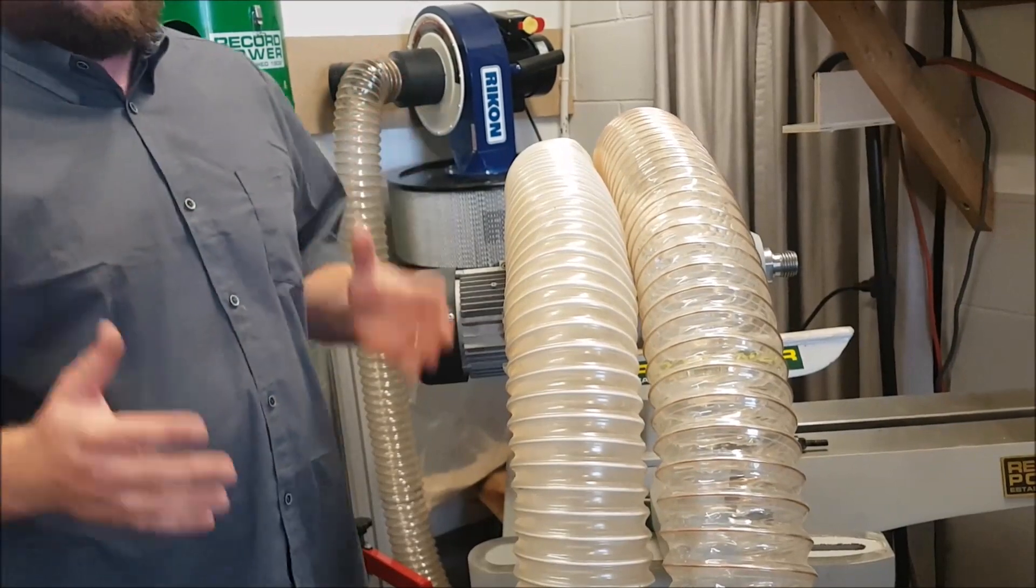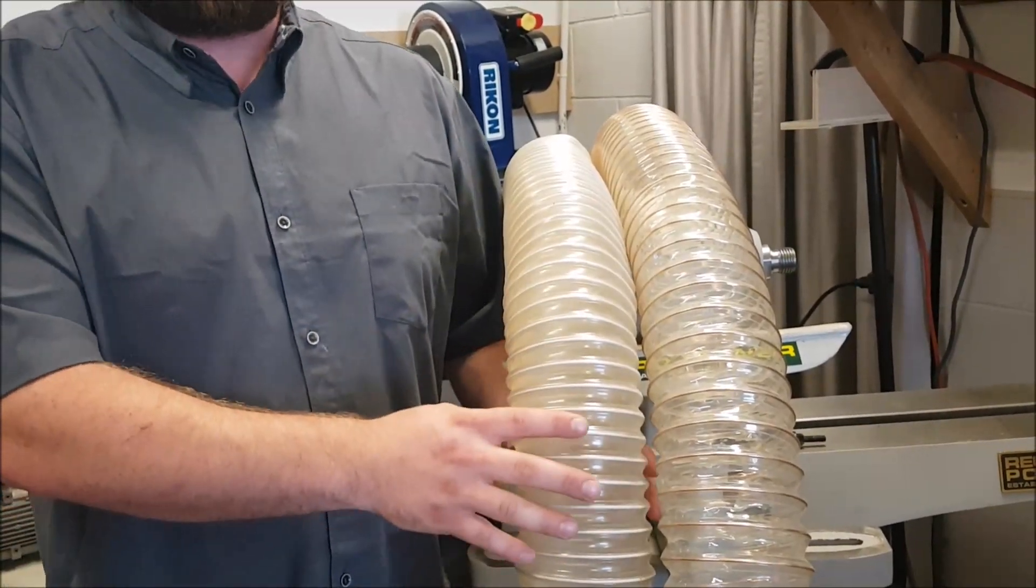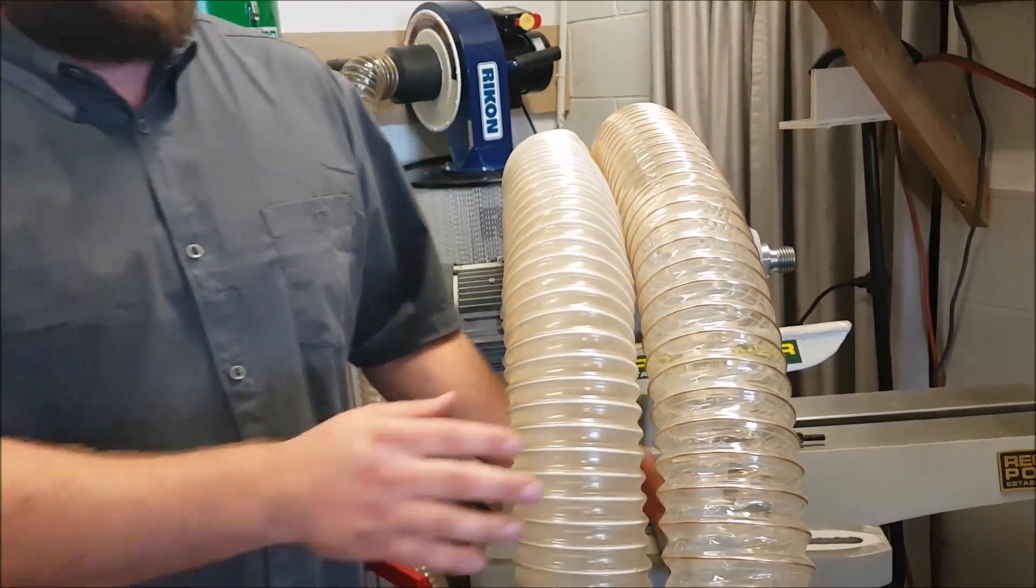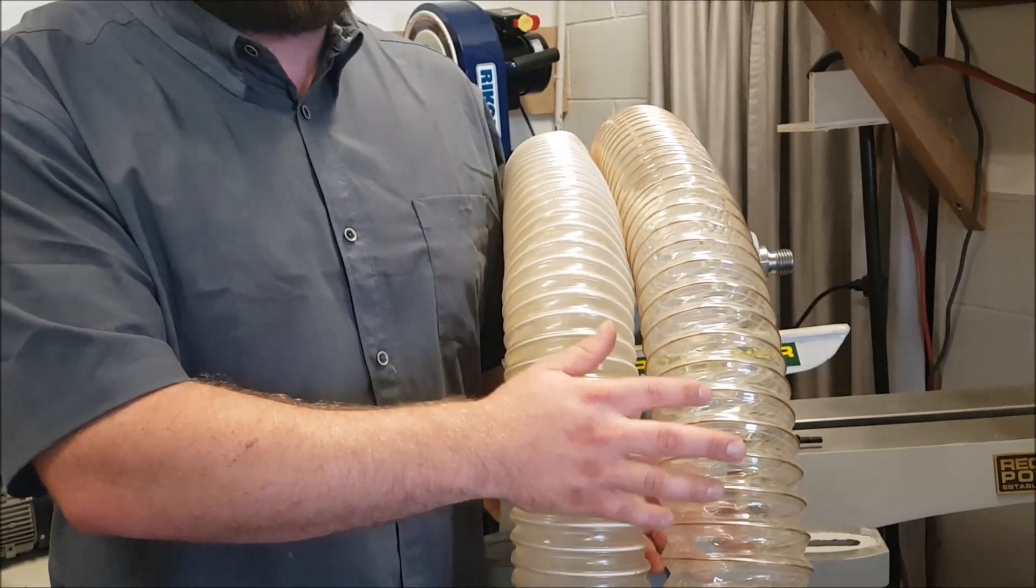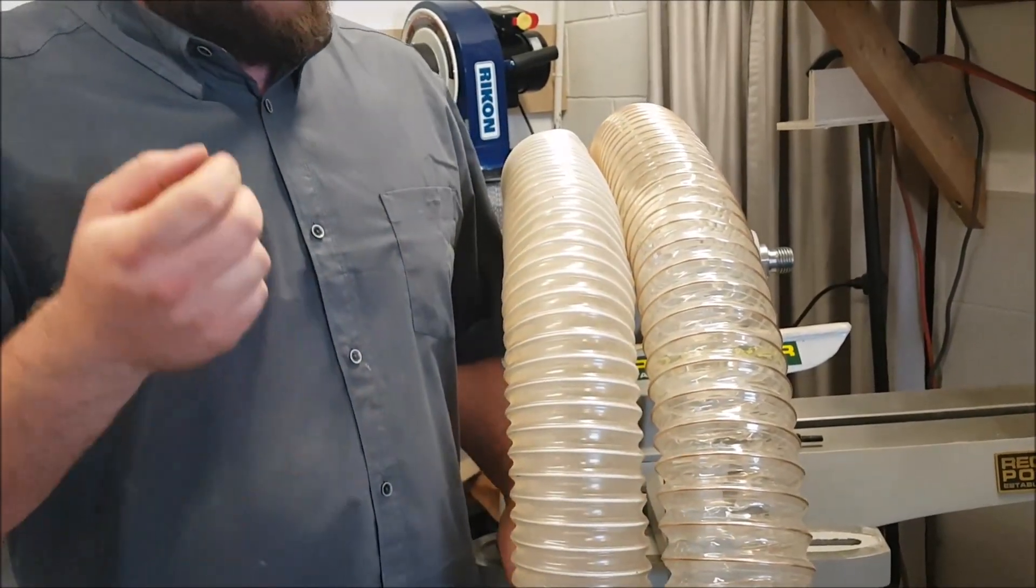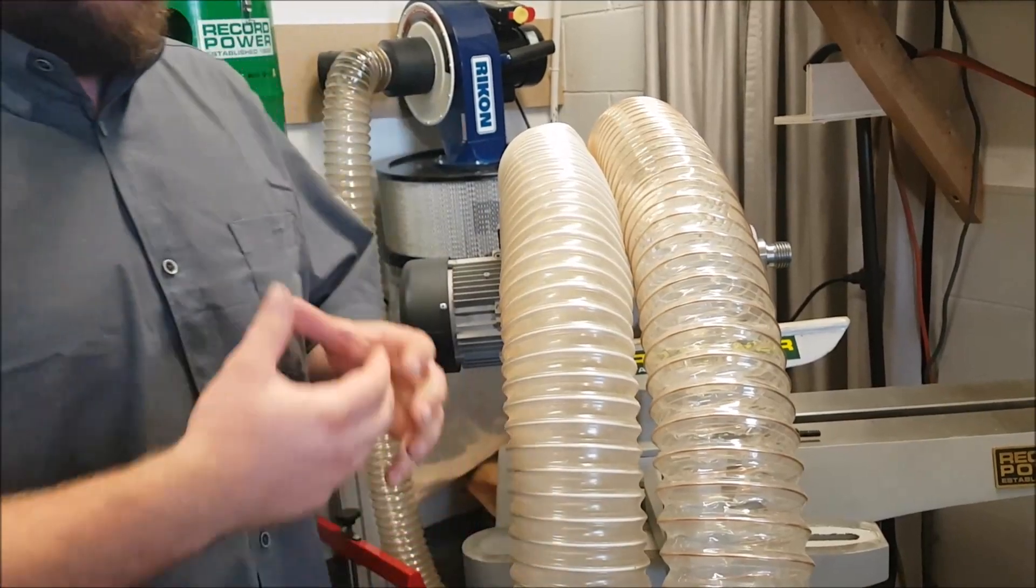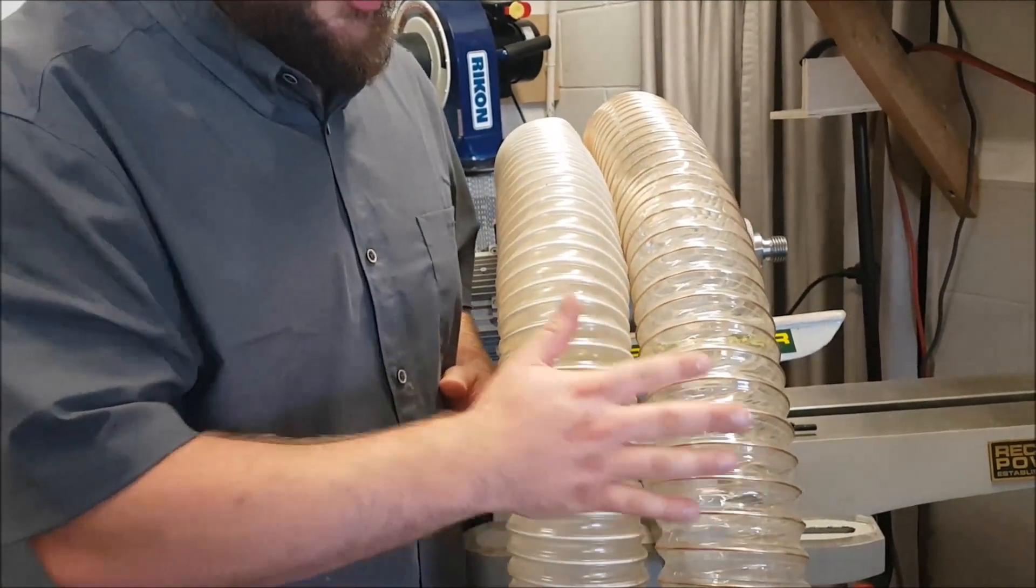The main difference is PVC is a little bit less expensive, definitely. Now polyurethane is a little bit more heavy duty. It's more puncture resistant and it is abrasive resistant.